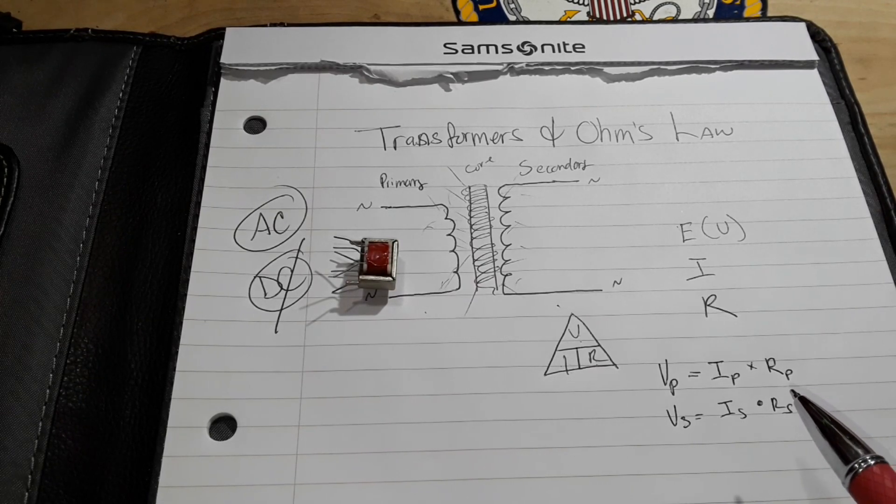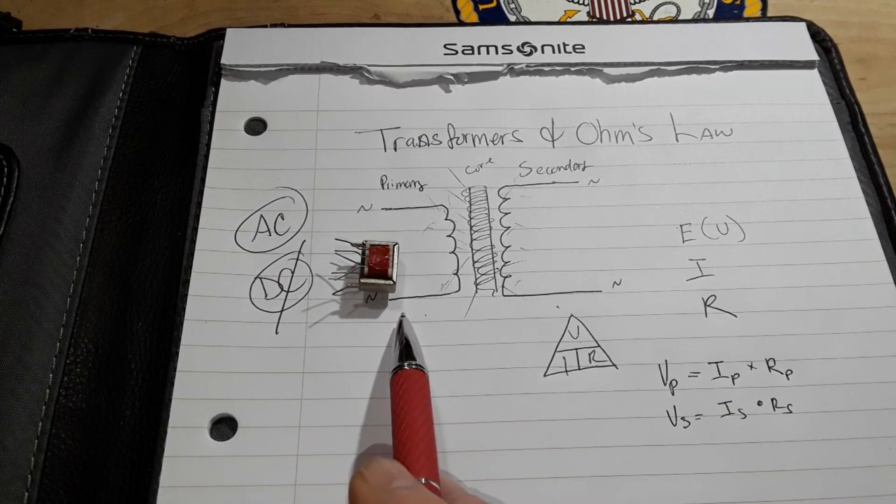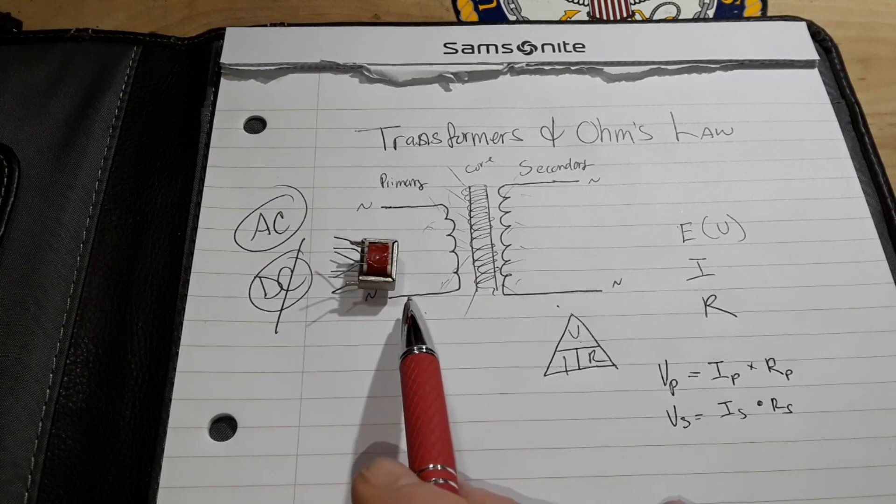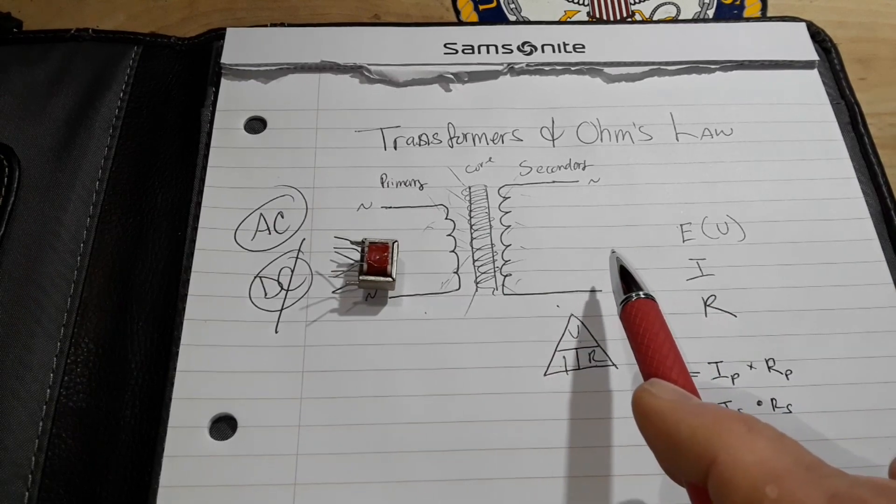So in essence, the voltage on the primary side is equal to the current multiplied by the resistance on the primary side. And the same relationship applies to the secondary side.